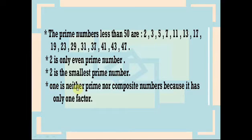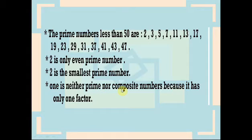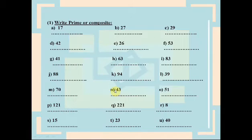1 is neither prime nor composite. It is not prime and also not composite because it has only one factor. The prime number has two factors and the composite number has more than two factors, so 1 is not a prime or composite number.